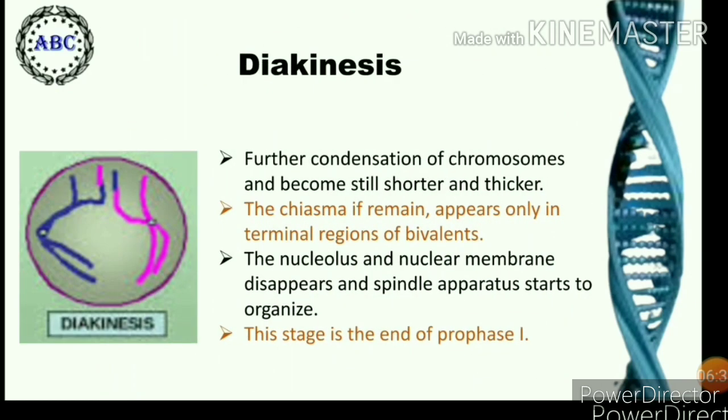In diakinesis, chromosomes become much shorter and thicker. The chiasmata, if remaining, appear only in the terminal region of bivalents. The bivalents move towards the periphery. The nucleolus and nuclear envelope disappear, and the spindle apparatus is organized. This stage marks the end of prophase first.